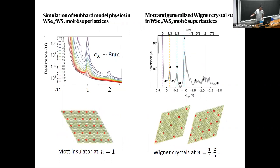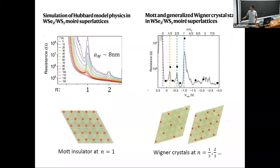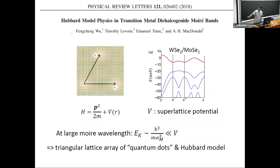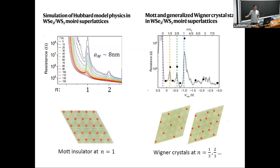Following MacDonald's proposal, experimental groups at Cornell and Berkeley studied the WSe₂/WS₂ semiconductor hetero-bilayer and indeed observed characteristic physics of the Hubbard model. Shown are resistance measurements as a function of filling factor. At filling factor two, when the first Moiré band is completely filled, you get a band insulator shown as a resistance peak. More prominently, at half filling, because of strong Hubbard repulsion, an insulating state appears — a Mott insulator.